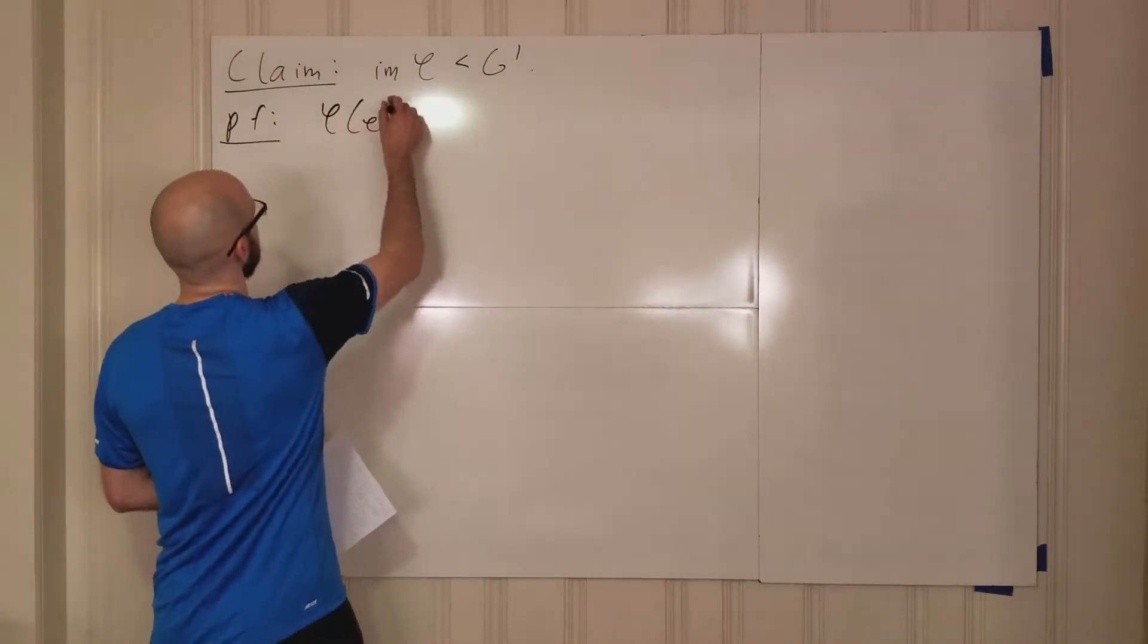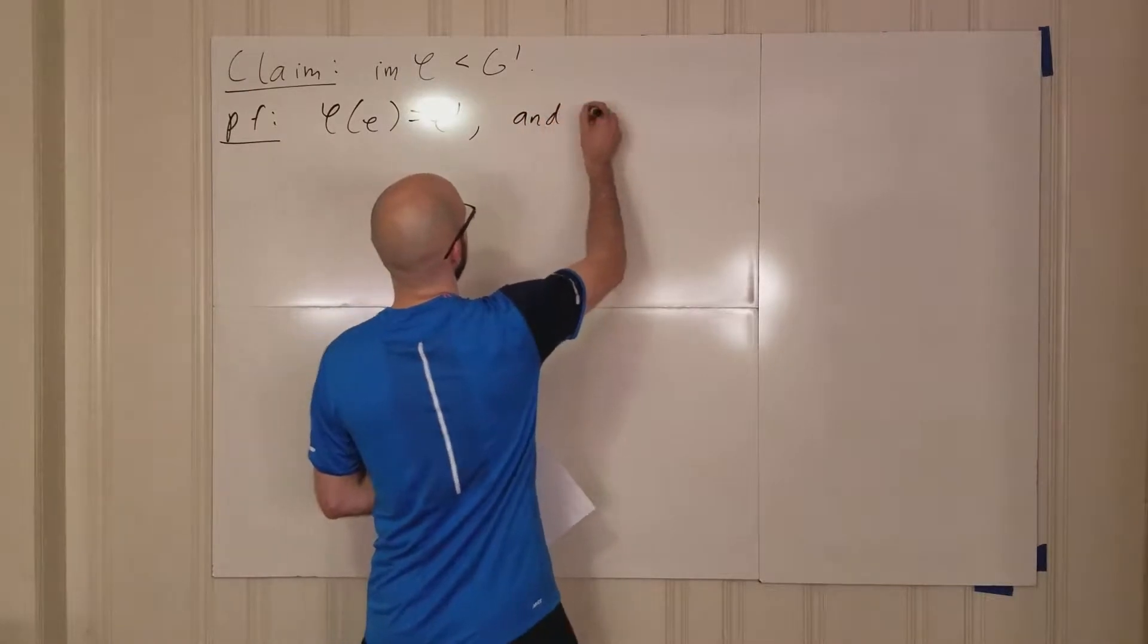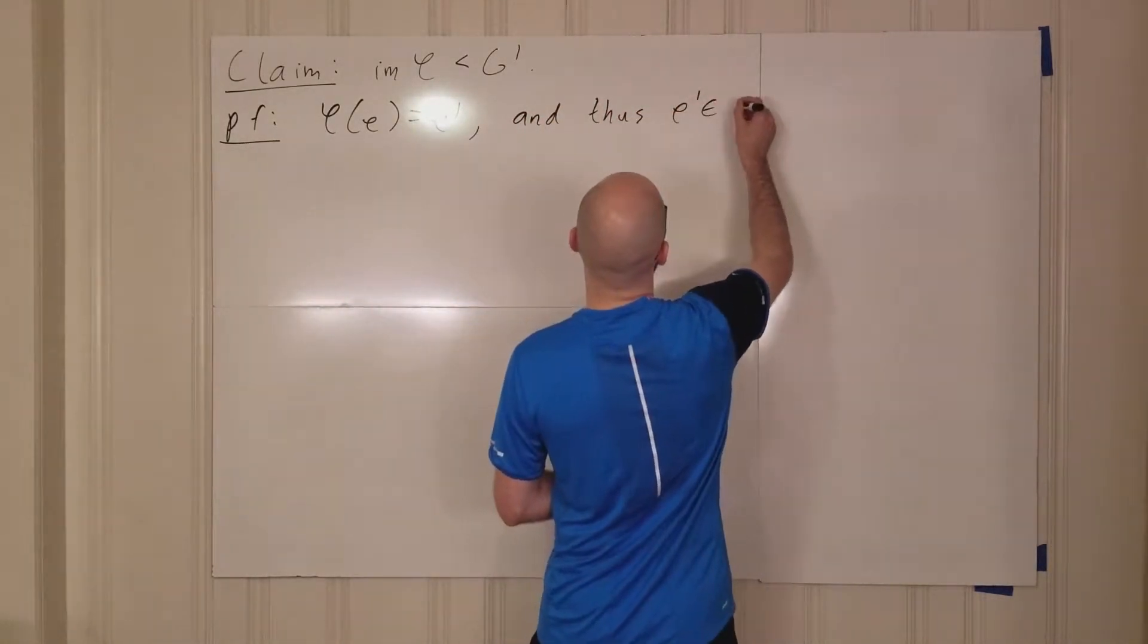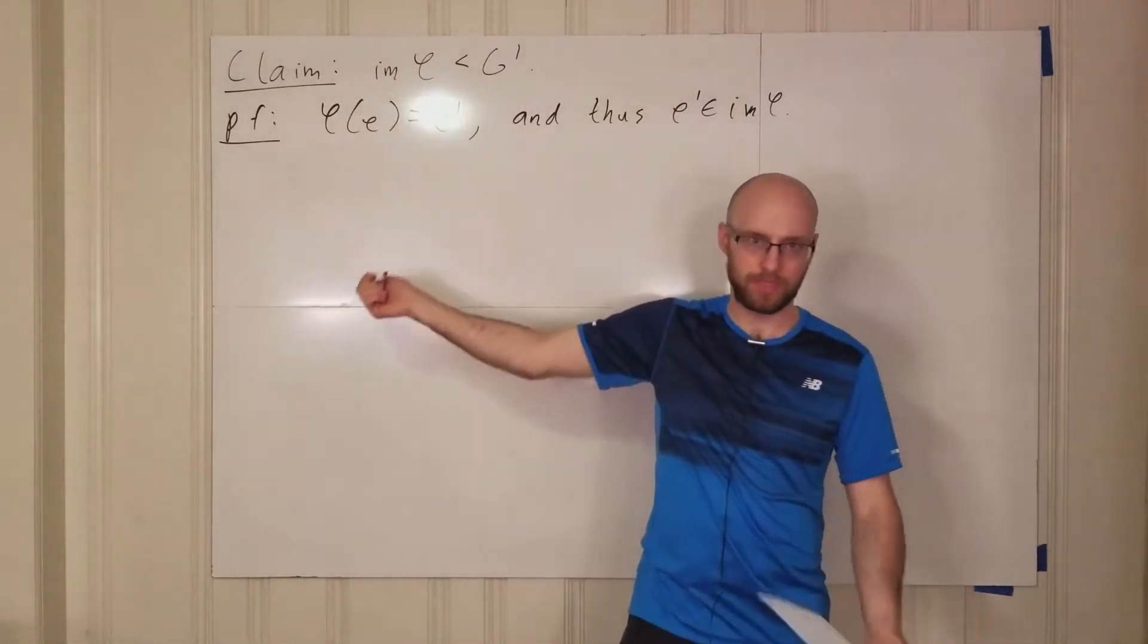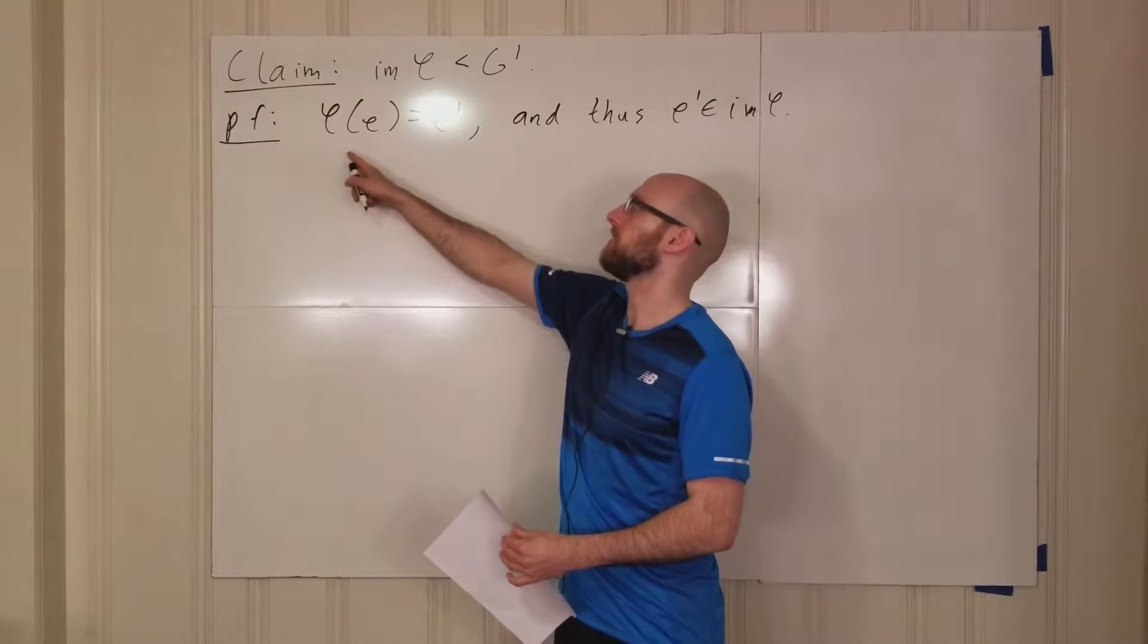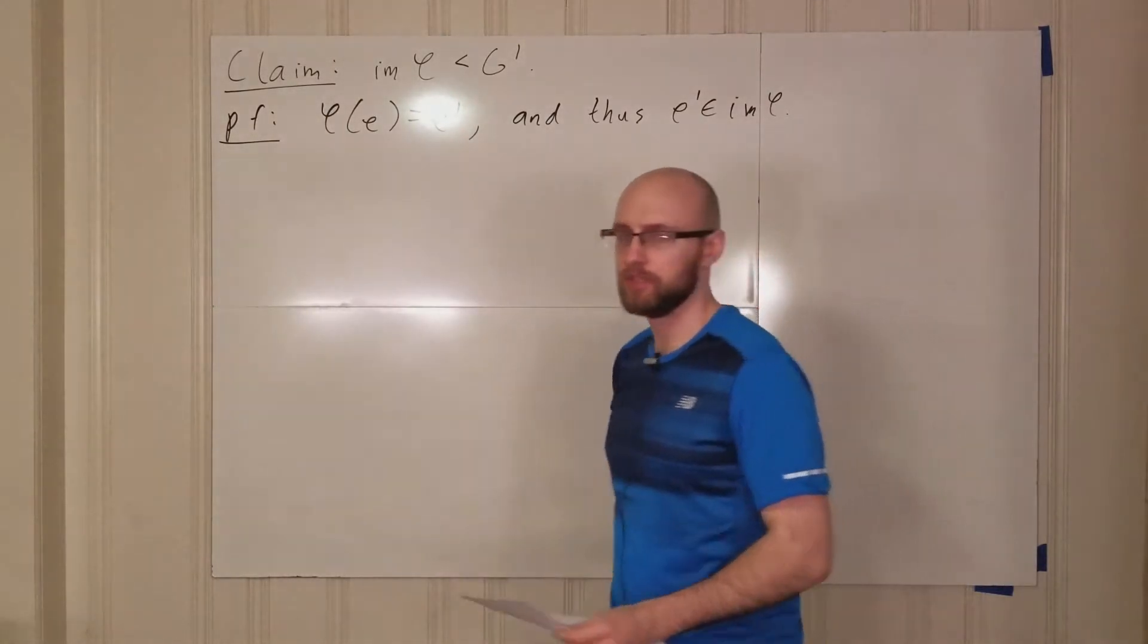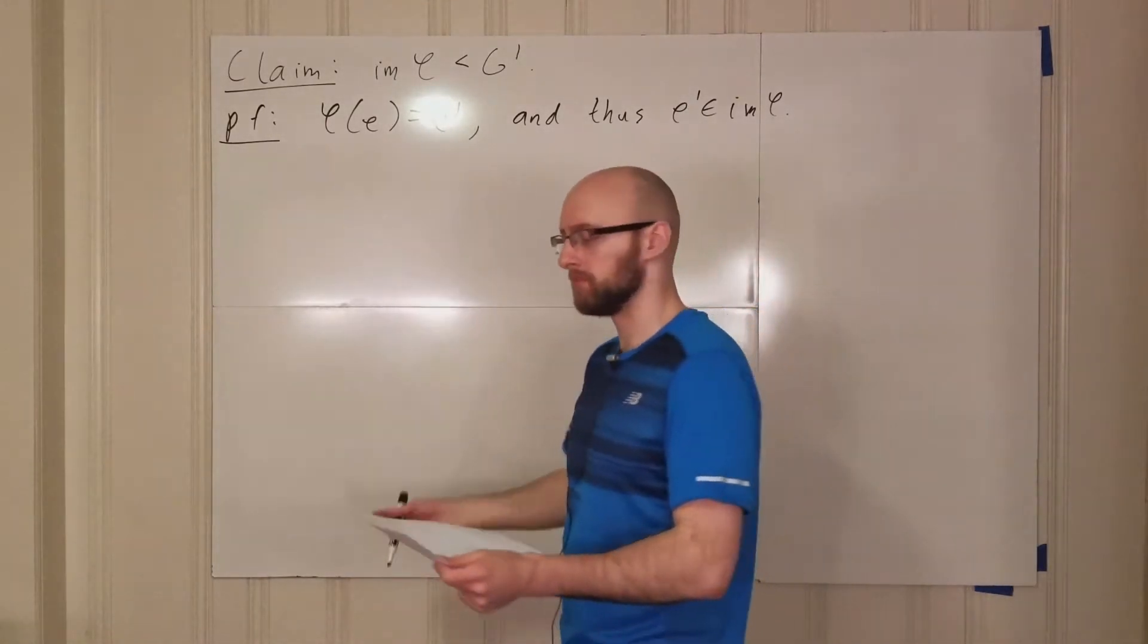So we know that phi of E equals E prime. And thus, E prime is in the image of phi, right? Phi of E is E prime. That's because it's a group homomorphism. And so there is something in G such that phi maps that thing to E prime. That means that E prime is in the image. Of course, E is the identity element of G, and E prime is the identity element of G prime.